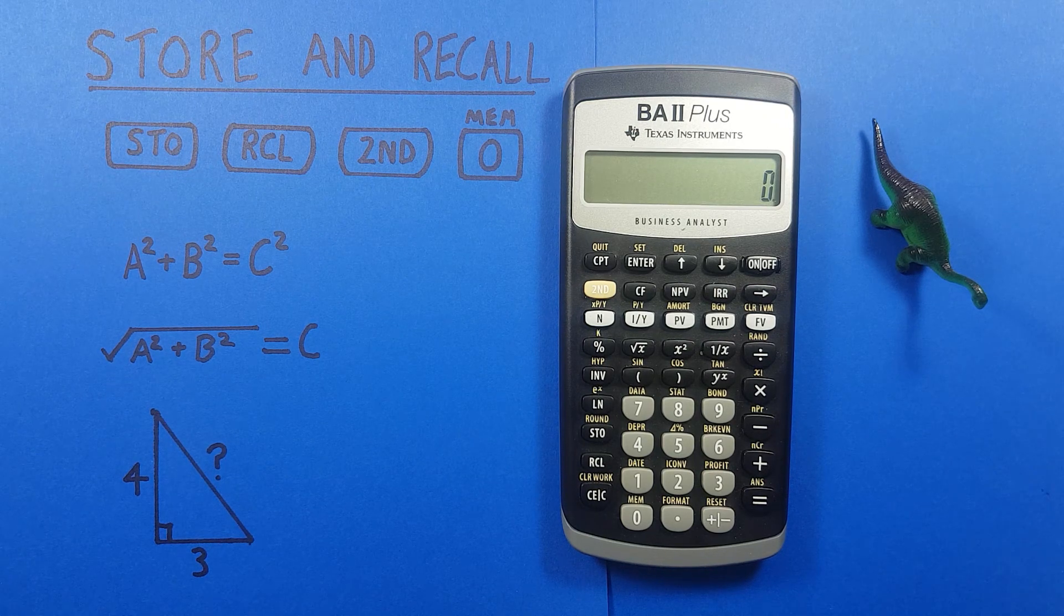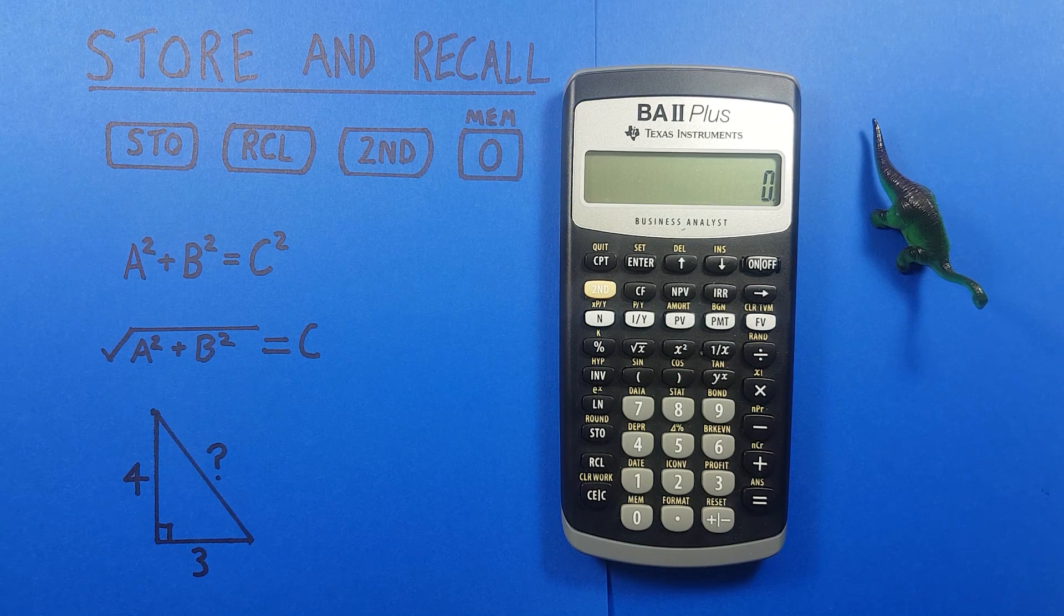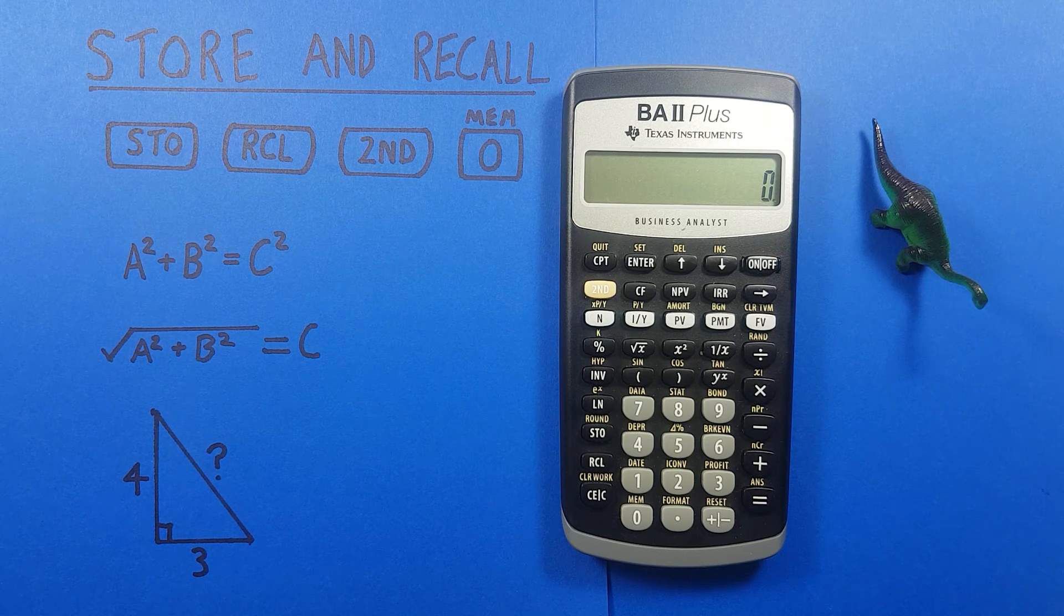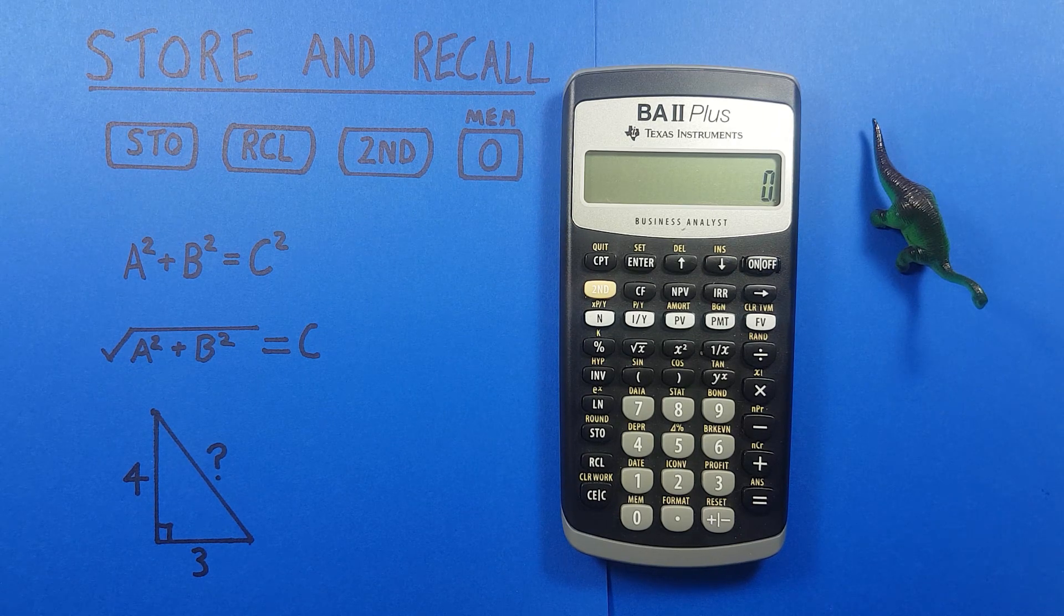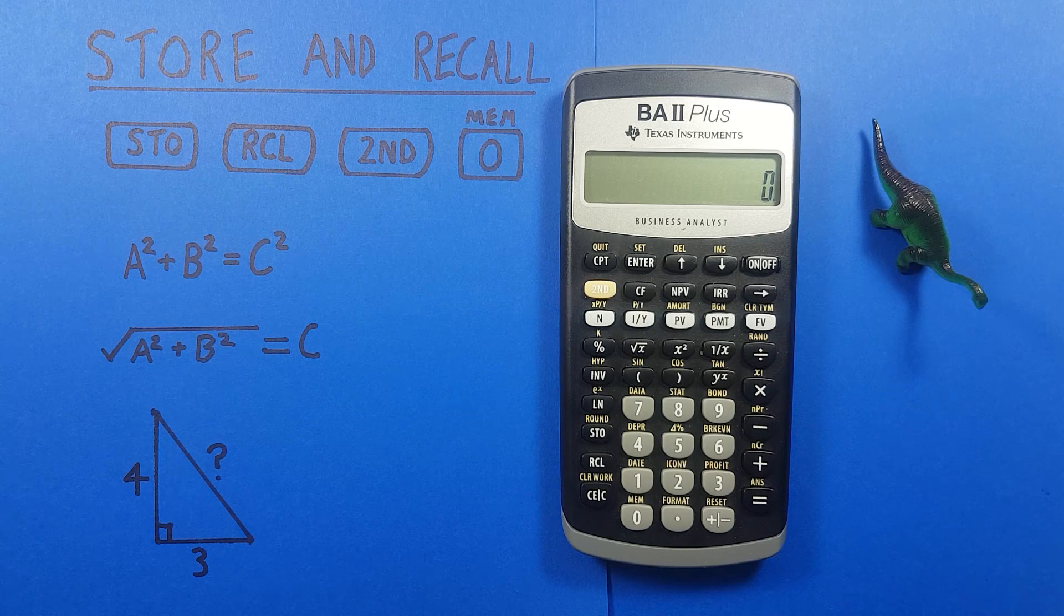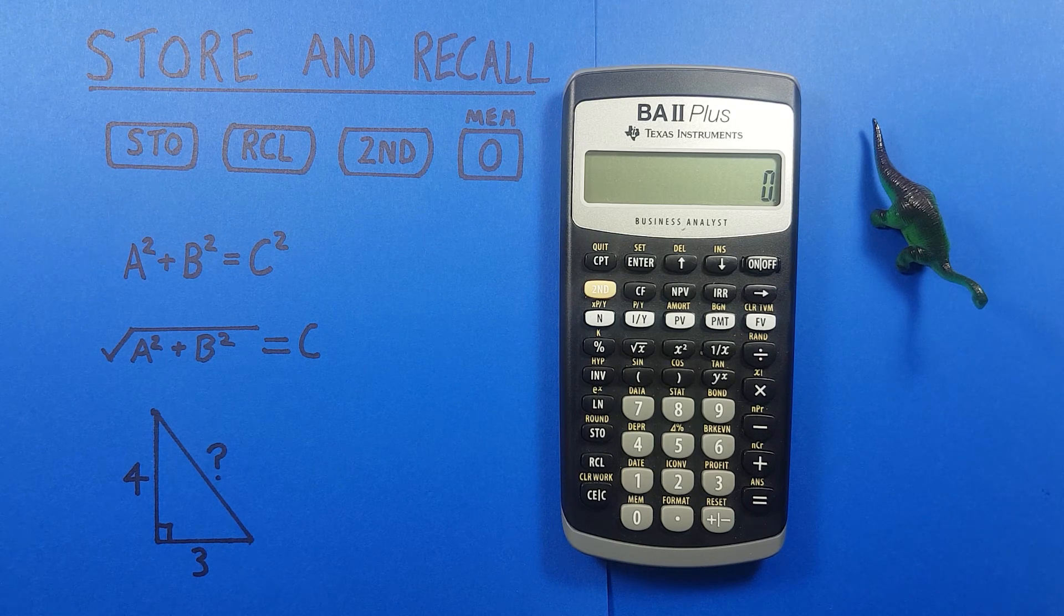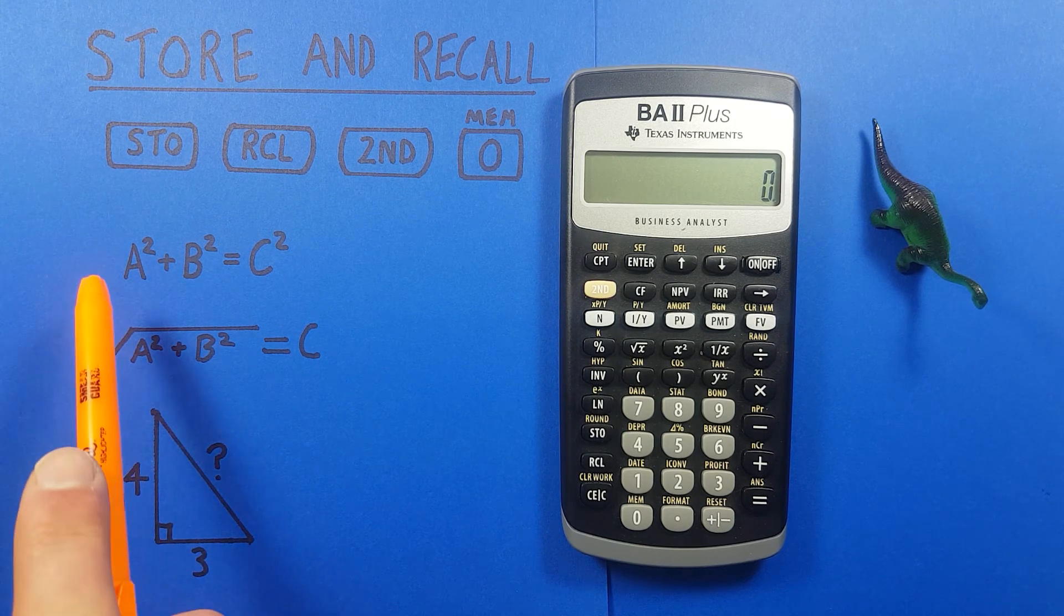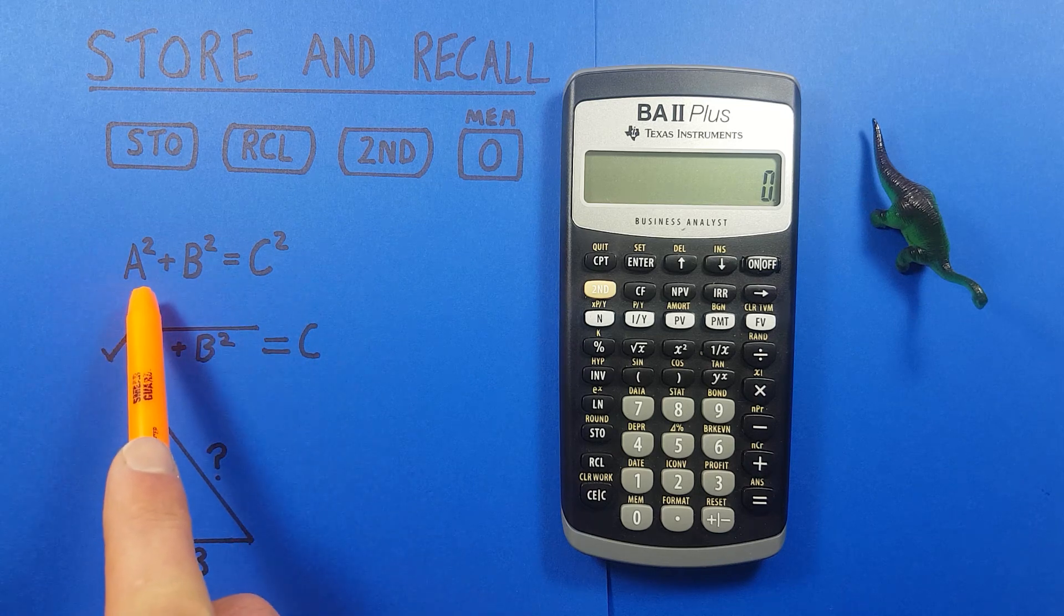Storing and recalling values is really handy on this calculator if you want to do a long or complicated calculation. Because it lets you store complicated numbers without having to type them in over and over. An example of this would be using Pythagoras to solve for a right angle triangle.